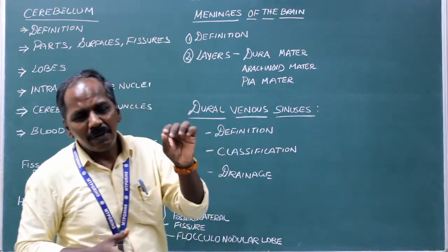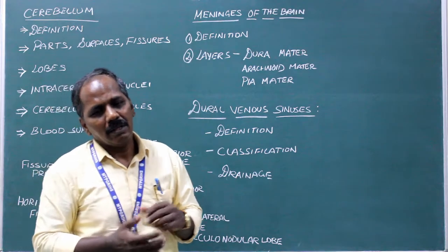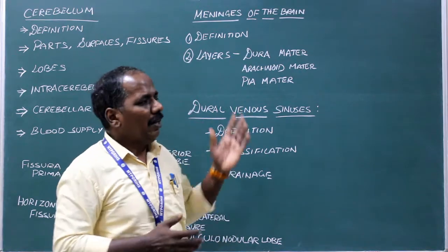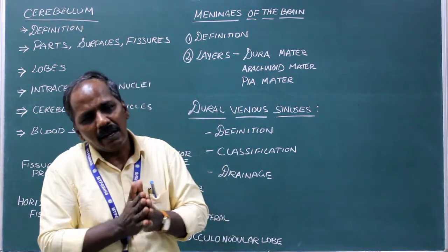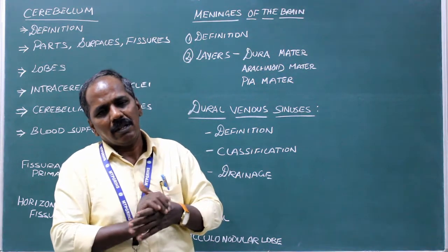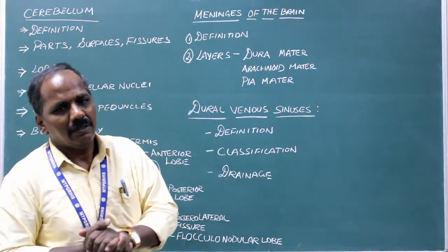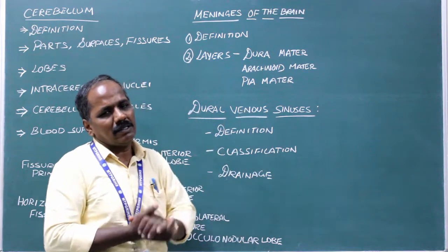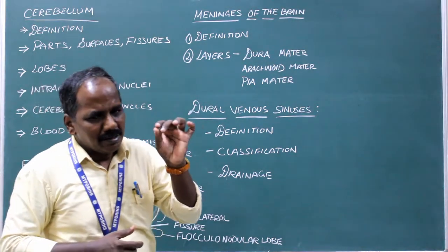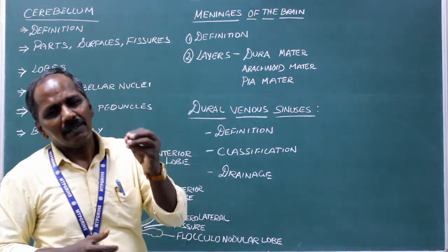Dura mater is the outermost layer, which is very tough and is made up of two layers: endosteal layer and meningeal layer. In certain areas, the two layers split and then unite, forming a space filled with venous blood. Dural venous sinuses are the spaces present between the two layers of the dura mater which are filled with venous blood.